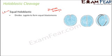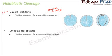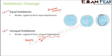In equal holoblastic cleavage, the zygote is divided into two equally sized blastomeres. In unequal holoblastic cleavage, complete cleavage still happens but the two halves are not equal — one is bigger and one is smaller. The bigger blastomere is called the macromere and the smaller one is called the micromere; micro means small and macro means big.